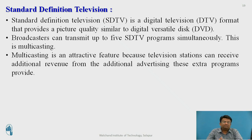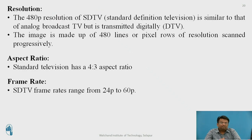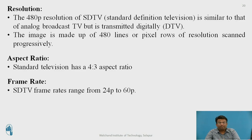SDTV, or Standard Definition TV, is part of digital television and is defined on the basis of resolution. The quality of SDTV is similar to that of a DVD. Broadcasters can transmit up to five SDTV programs simultaneously, which is called multicasting. The resolution of SDTV is 480p, similar to analog broadcasting TV but transmitted in digital form. The image is made up of 480 lines (pixels or rows), displayed progressively. The aspect ratio is 4:3 (full screen), and the frame rate ranges from 24p to 60 frames per second.